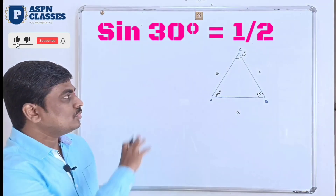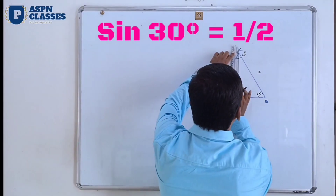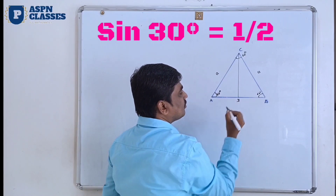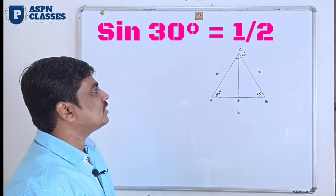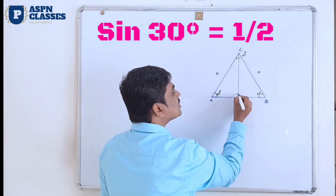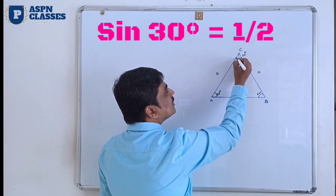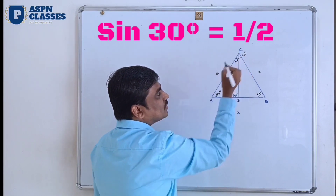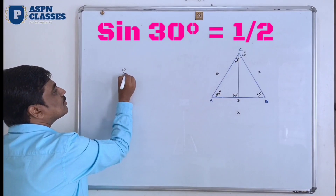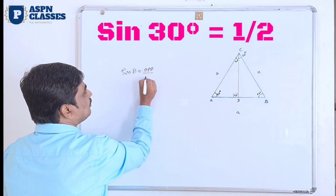All three sides are equal to a. I will draw a perpendicular and denote the foot as D. So now I will consider triangle ADC. This is 90 degrees, this is 60 degrees, and obviously this is 30 degrees. So now we have this right triangle to work with.